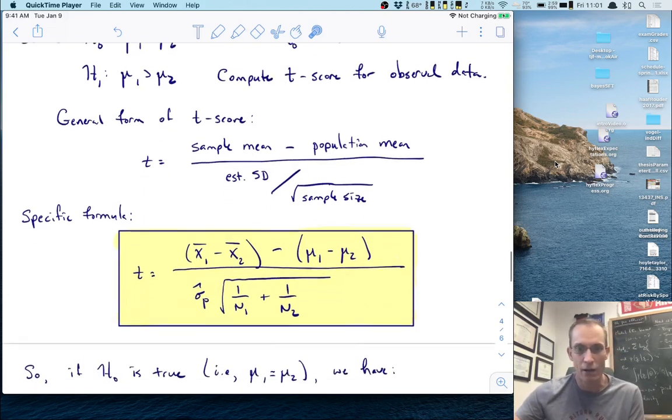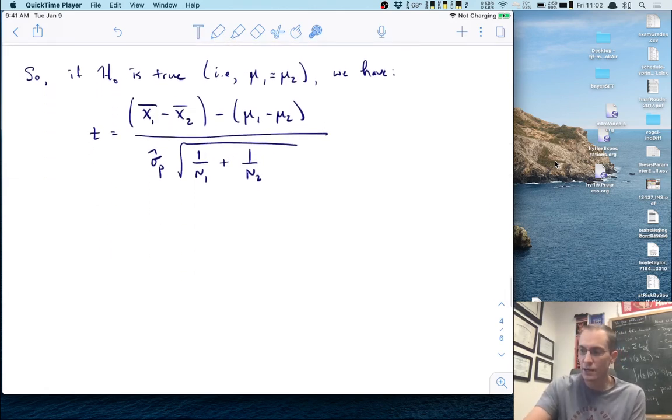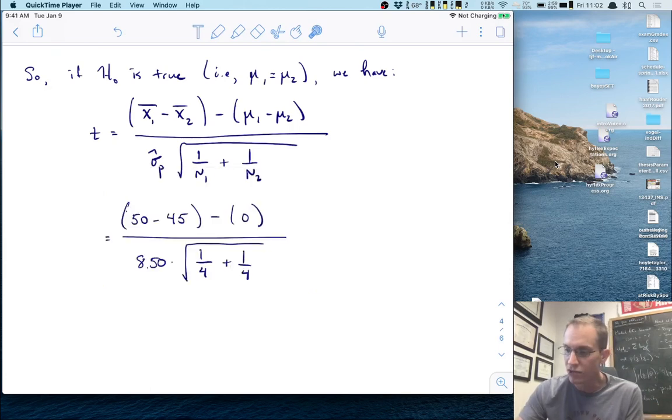If the null is true, mu 1 equals mu 2. Let's replace all the values in the t-score. The mean of group 1 is 50, group 2 is 45, and mu 1 minus mu 2 is 0 under the null. We divide by the pooled standard deviation of 8.50 times the square root of 1 over 4 plus 1 over 4.